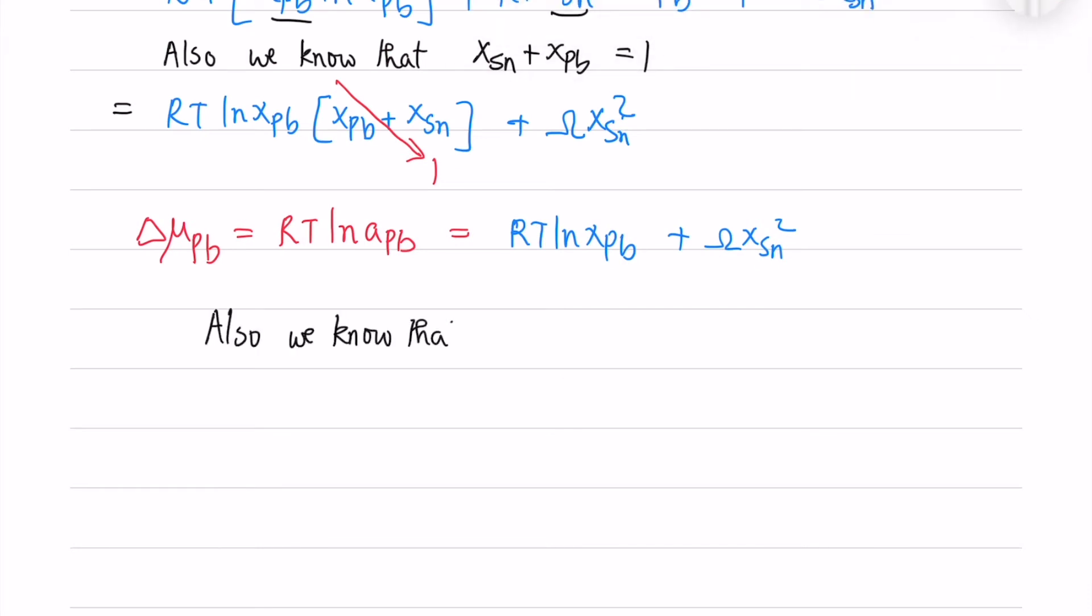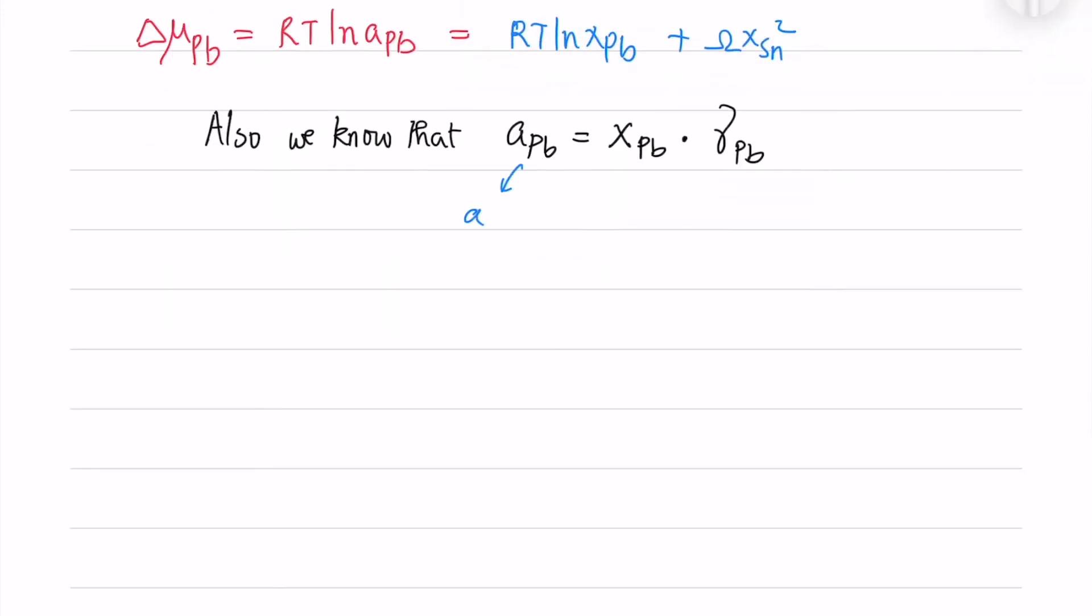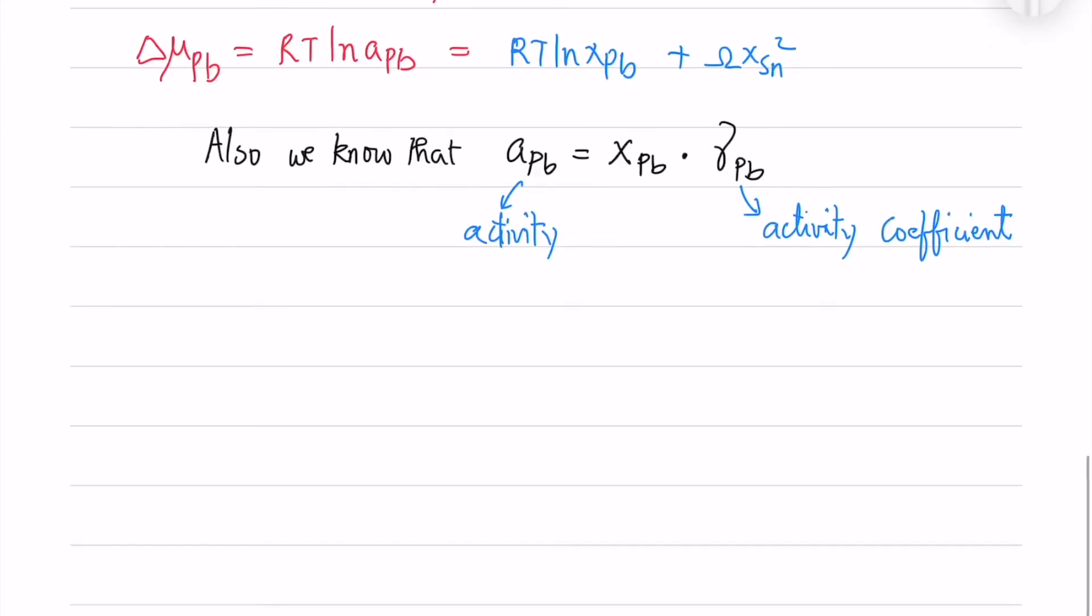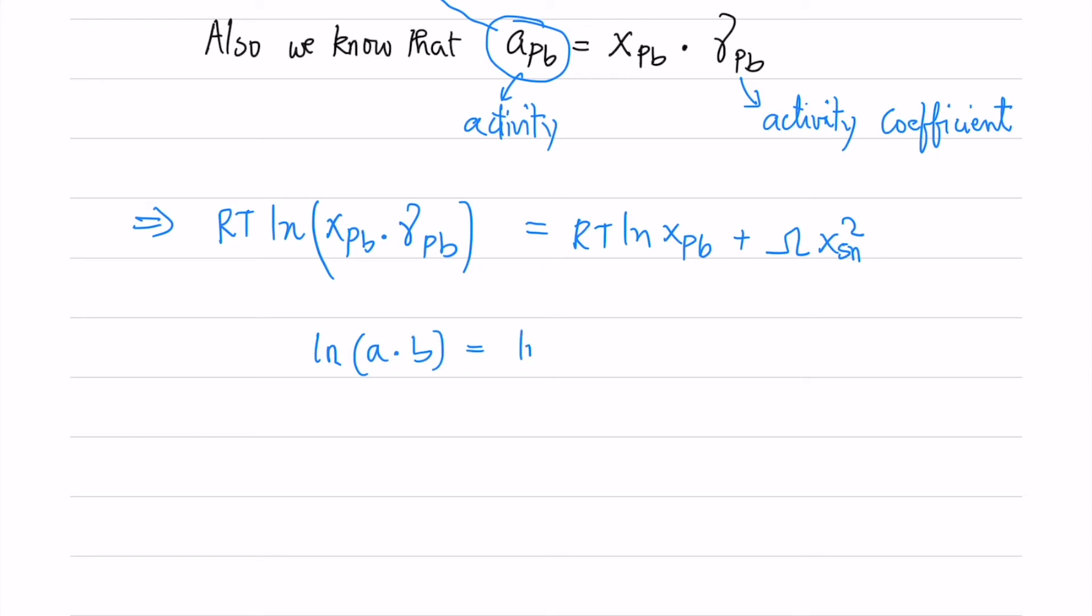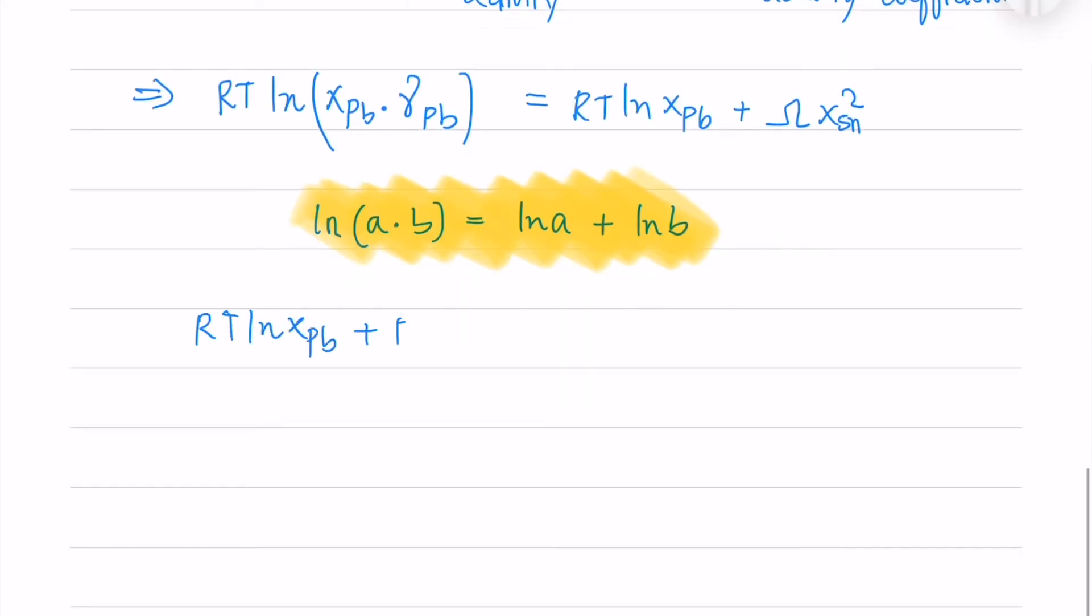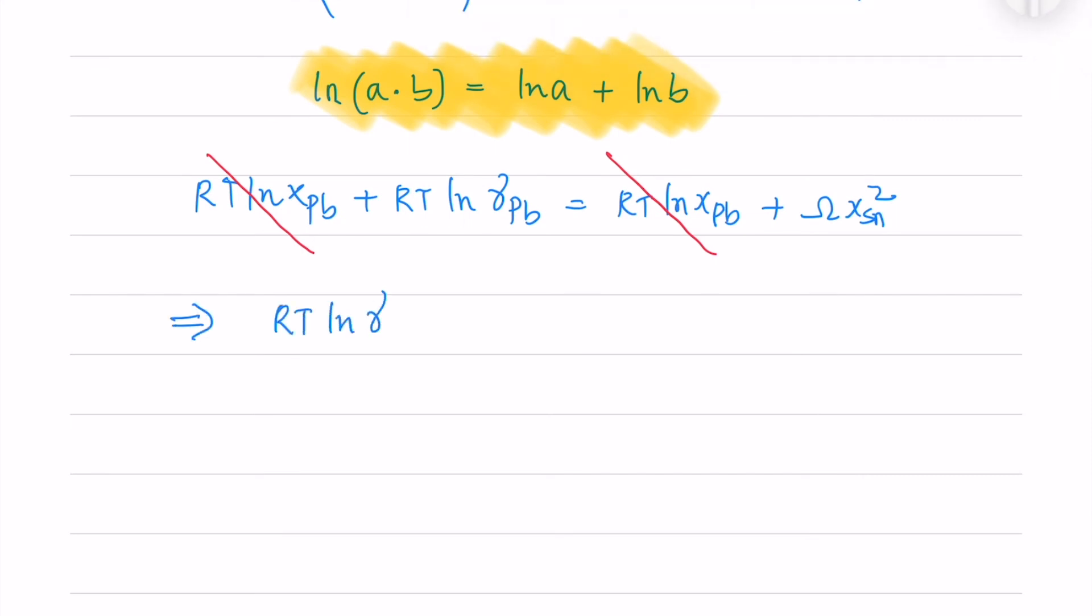Also we know that activity is nothing but mole fraction times the activity coefficient. So I will put that term inside: ln(x_Pb times gamma_Pb). Now we know ln(a times b) equals ln a plus ln b from logarithmic equations. So I will expand this term. I am left with four terms. I can cancel RT ln x_Pb on both sides. So I have a very simple equation.